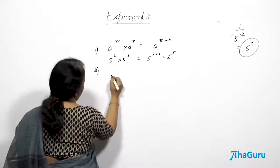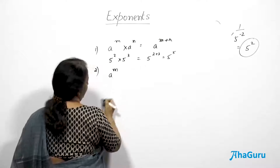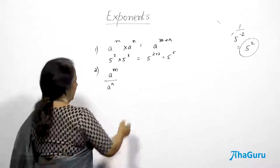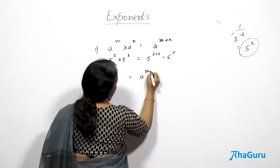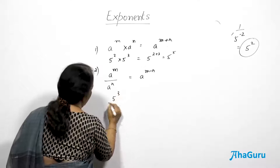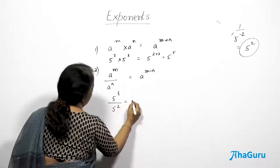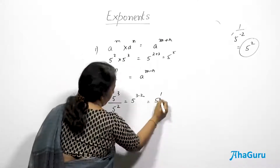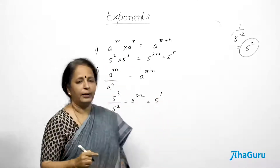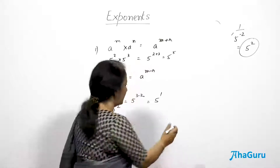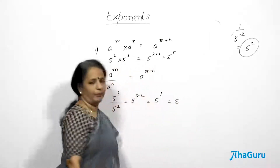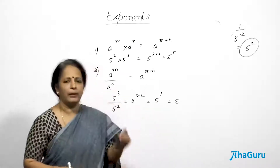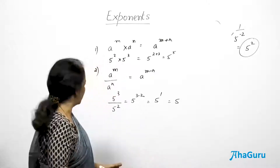The second law: a^m divided by a^n = a^(m−n). So 5³ ÷ 5² = 5^(3−2) = 5^1. Remember, any number raised to the power 1 is the same number — whatever the base, as long as the power is +1, the answer is that same number.